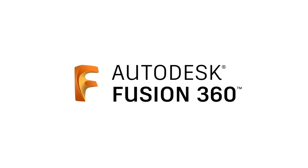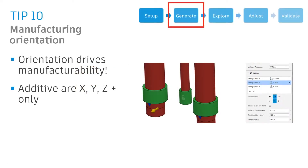Tip number 10: when setting up our manufacturing settings within generative design, we have to always be aware of the orientation settings for manufacturability. Orientation drives all of the manufacturing processes within generative design.